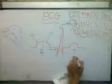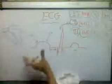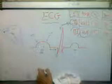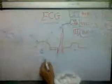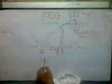Then, the ST segment and T wave. The T wave refers to ventricular repolarization or ventricular relaxation. If we look at the action potential of the cardiac muscle, this part is ventricular depolarization made by QRS, this is the plateau phase corresponding to the ST segment, and this is the repolarization corresponding to the T wave.